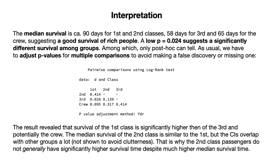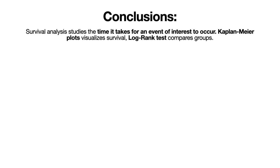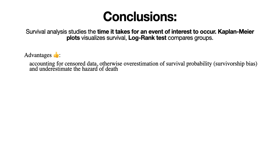These are the conclusions. Survival analysis studies the time it takes for an event of interest to occur. Kaplan-Meier plots visualize the survival, while the log-rank test compares groups. Kaplan-Meier has important advantages: it accounts for censored data, otherwise we would overestimate survival probability — that is survivorship bias — and would also underestimate the hazard of death.